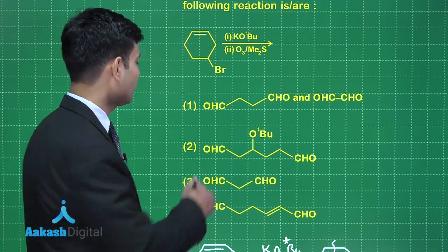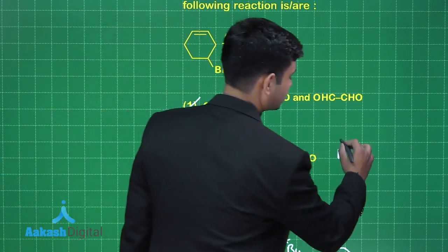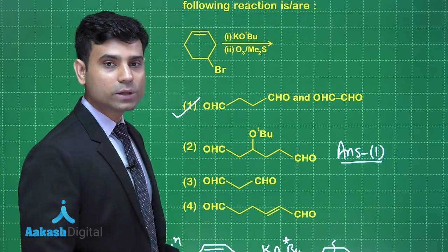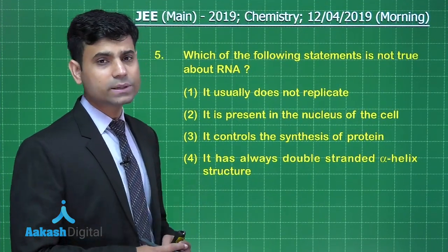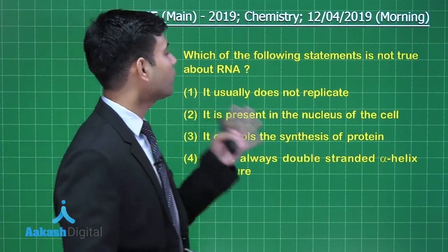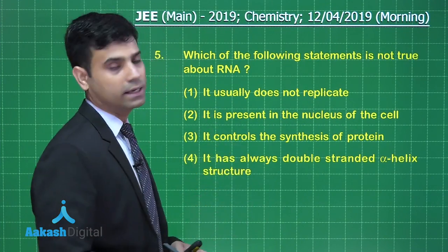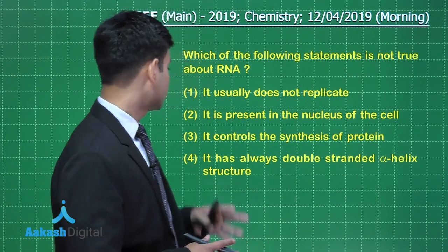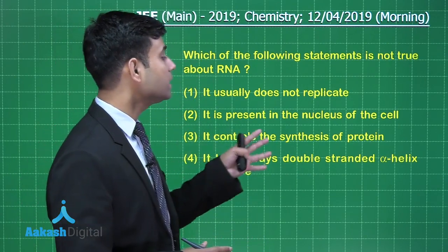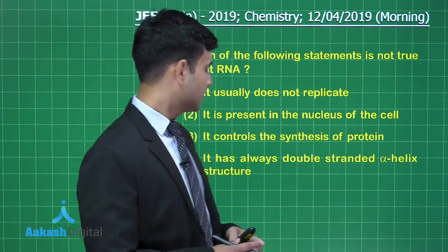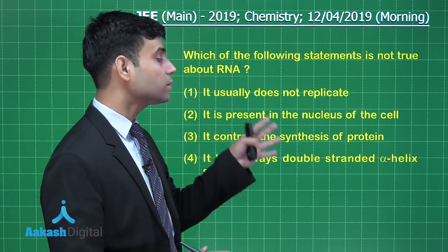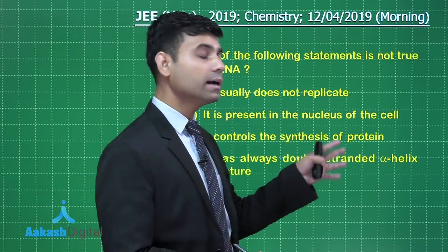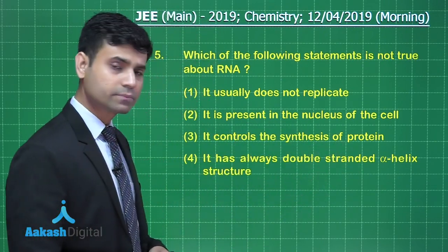Now let's move to the next question. This is the next question we have. It says which of the following statements is not true about RNA? The first statement says it usually does not replicate. Second statement says it is present in the nucleus of the cell. Third statement says it controls the synthesis of protein. And fourth statement says it has always double-stranded alpha helix structure.